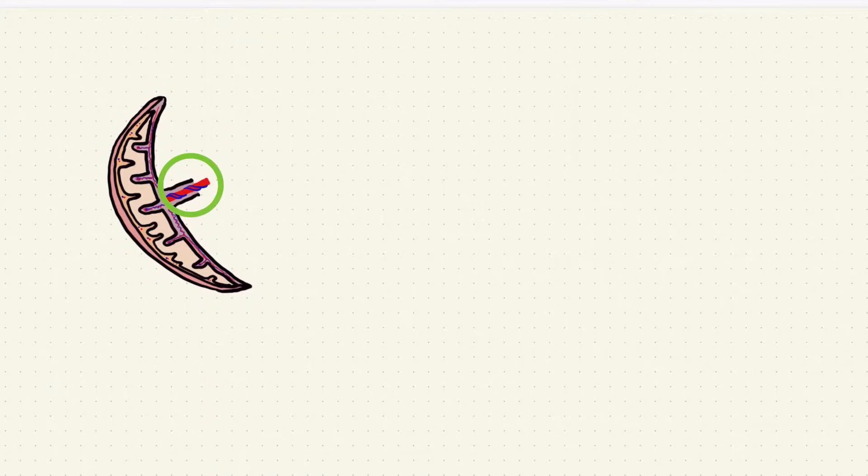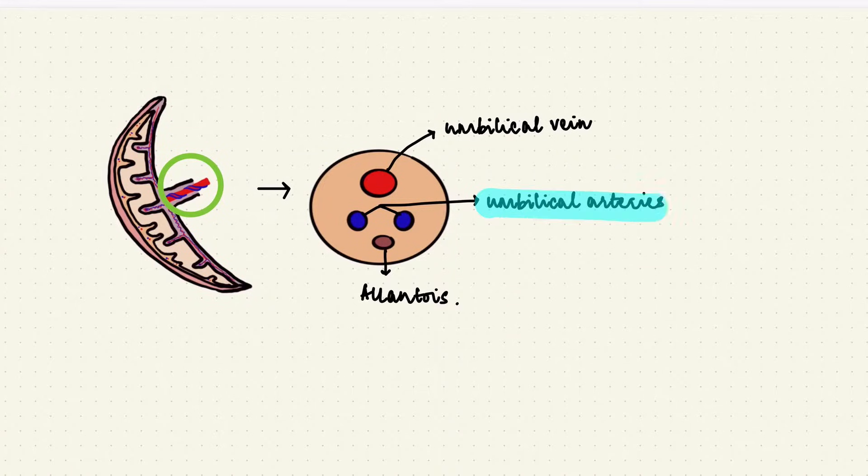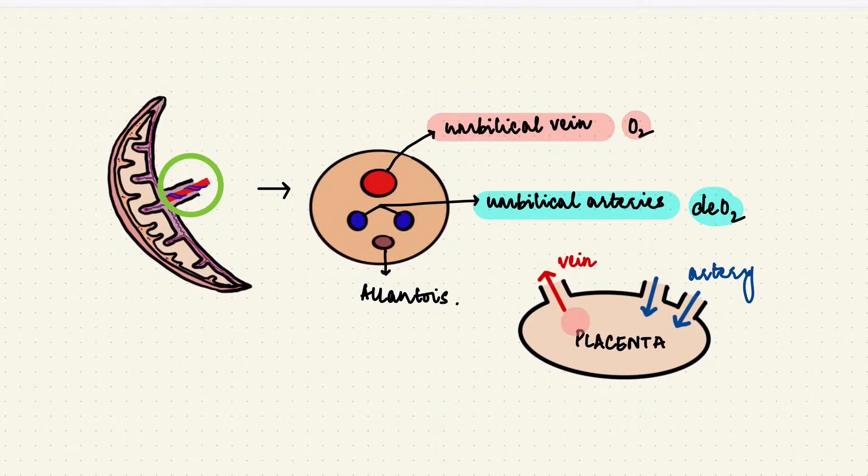The umbilical cord from the placenta has two umbilical arteries and one umbilical vein. Compared to the usual arteries and veins, the umbilical artery has deoxygenated blood and the umbilical vein oxygenated blood. Why does that happen? Because the placenta is the one that's oxygenating blood. So the vein which carries blood from the placenta to the heart will be oxygenated and the arteries which come from the heart to the placenta will bring deoxygenated blood for oxygenation.